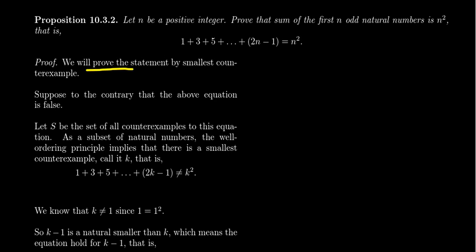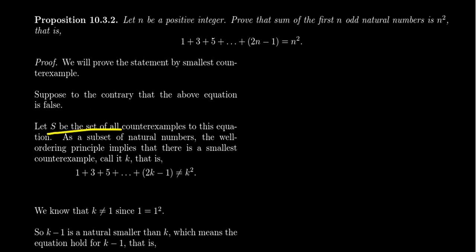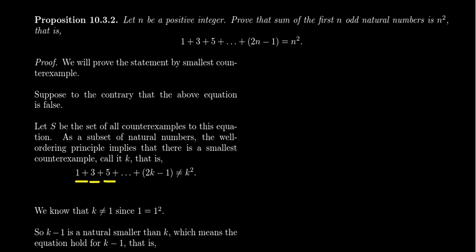Suppose to the contrary that the above equation is false — that there exists some positive integer for which it doesn't hold. The set S of all counterexamples to this equation is a set of natural numbers: if it doesn't work for 17, then 17 is in the set; if it doesn't work for 39, 39 is in the set. This is a non-empty subset of natural numbers, so by the well-ordering principle there is a smallest counterexample — call it k. That means 1 + 3 + 5 + ... + (2k − 1) does not equal k².